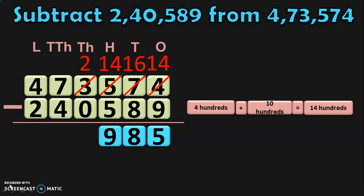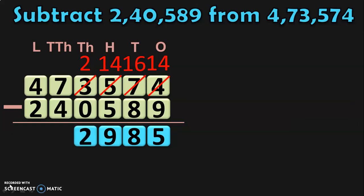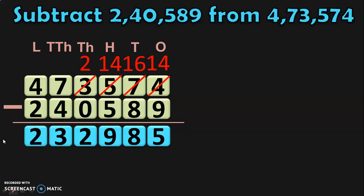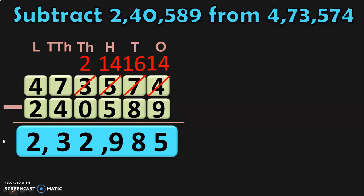Now, in the thousands place, you have 2 minus 0, which gives you 2. When 0 is subtracted from any number, you get the same number. Next, move on to the ten thousands place where we have 7 minus 4, which gives you 3. Then, in the lakhs place, you have 4 minus 2, giving a difference of 2. So, the difference between the two numbers is 2,32,985.